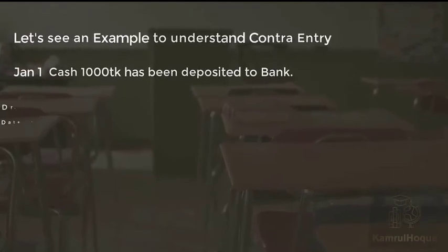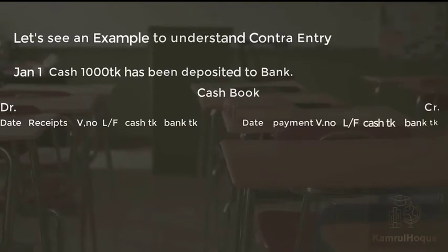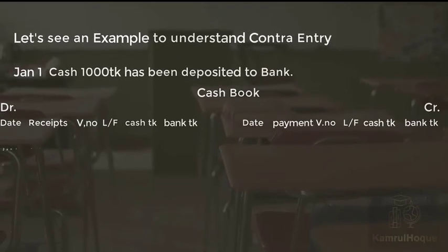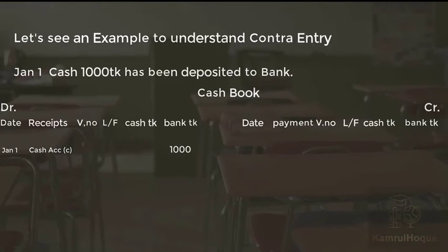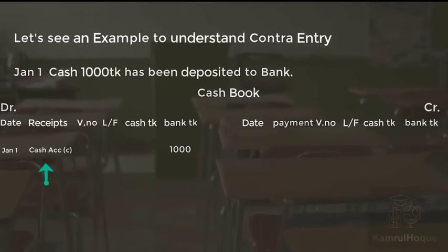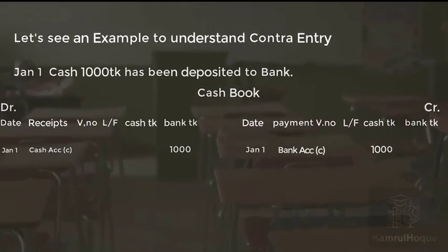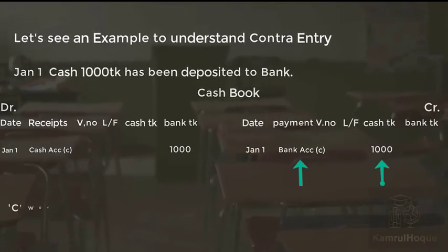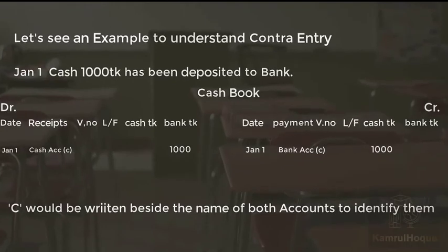For example, cash of $1,000 has been deposited to the bank. In the cash book, bank is debited $1,000 and cash is credited. The letter 'C' is written beside the account name in the folio column to identify it as a contra entry. This shows the dual effect: bank is debited and cash is credited between the bank and cash columns.